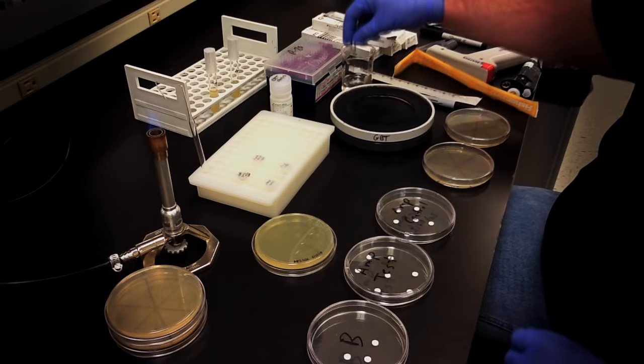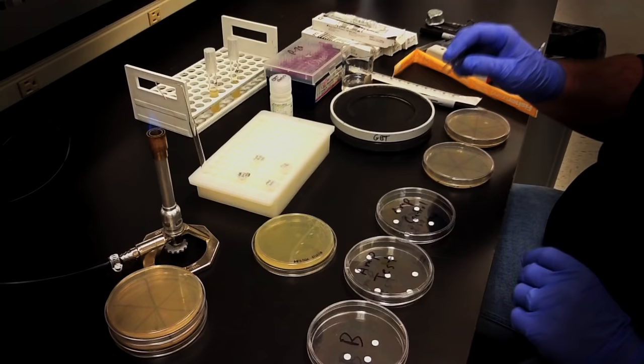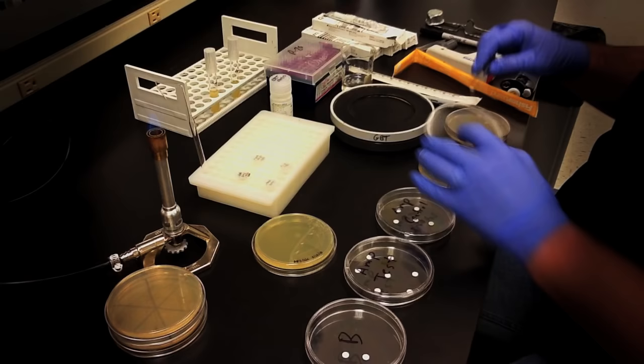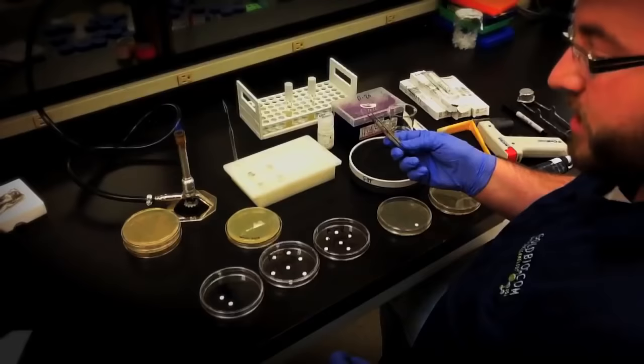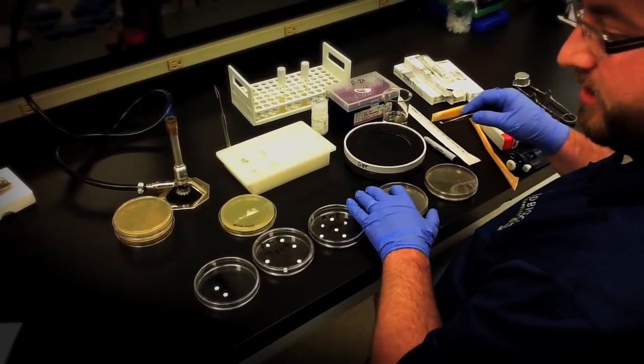Working quickly, you'll use tweezers to place the discs onto the center of the sectioned area, pressing them gently into place. You'll want to make sure to sterilize your tweezers in 70% ethanol between discs. For each plate, I always include a blank disc with no antibiotic and a purchased disc as a control.